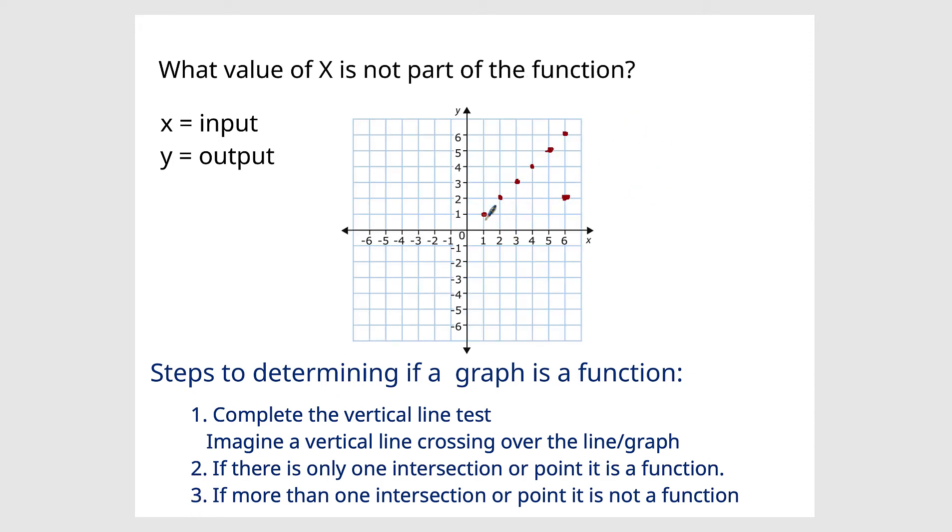Now, what sometimes if it's even not a line, they ask for what value of x is not part of the function. Like maybe it's multiple choice. Maybe it looks like this and you have to choose. Maybe it's like 1, 3, 4, and 6. So 1 outputs 1, 2 outputs 2, 3 outputs 3, 4 outputs 4. But 6 outputs 2 and it outputs 6. So 6 does not represent a function. It has two outputs for the one input. Again, x is the input and y is the output.